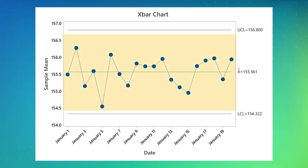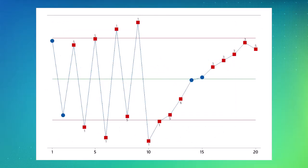Points that fall randomly within the control limits indicate that your process is in control and exhibits only common cause variation, which is the natural variation that you expect. Points that fall outside the control limits or display a non-random pattern indicate special cause variation exists in your process.